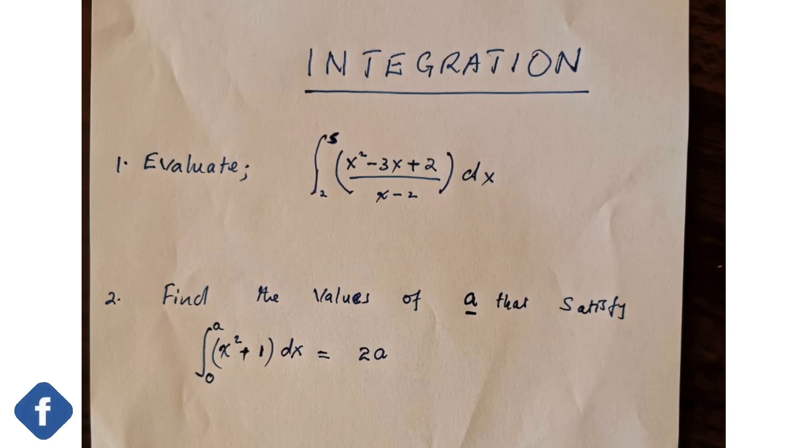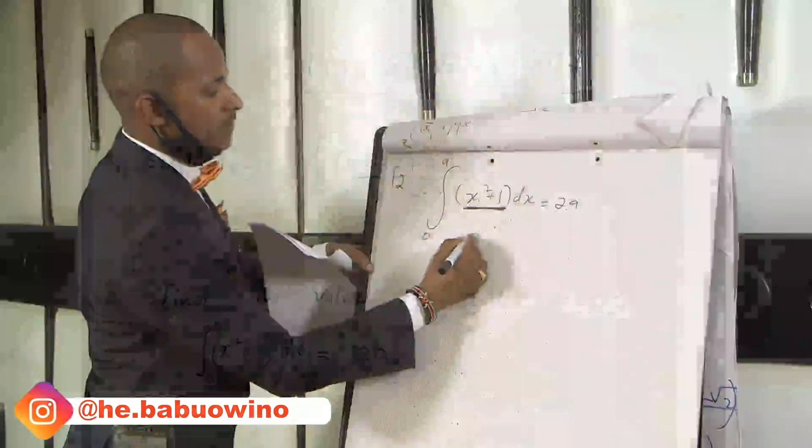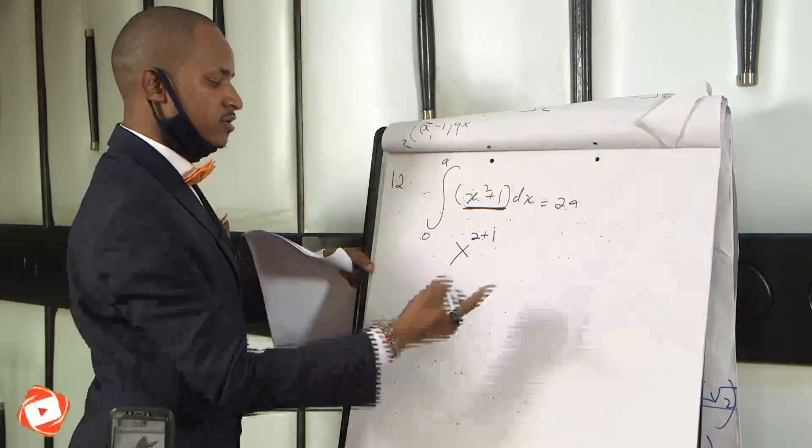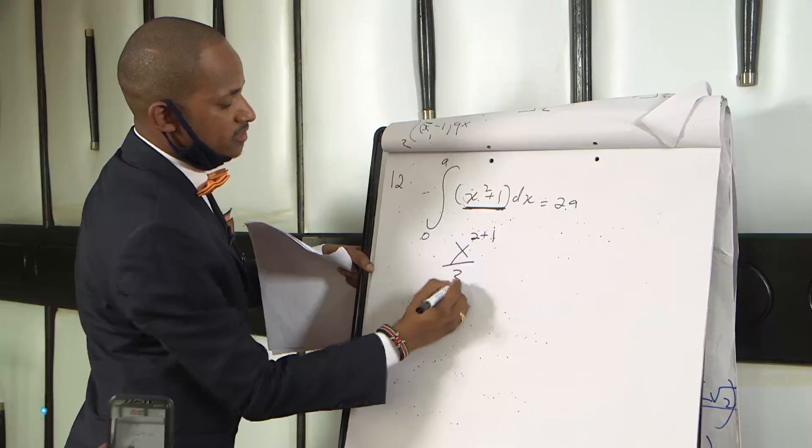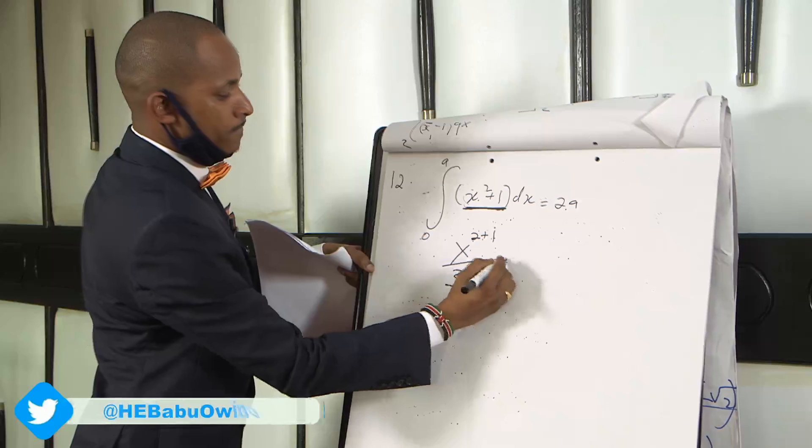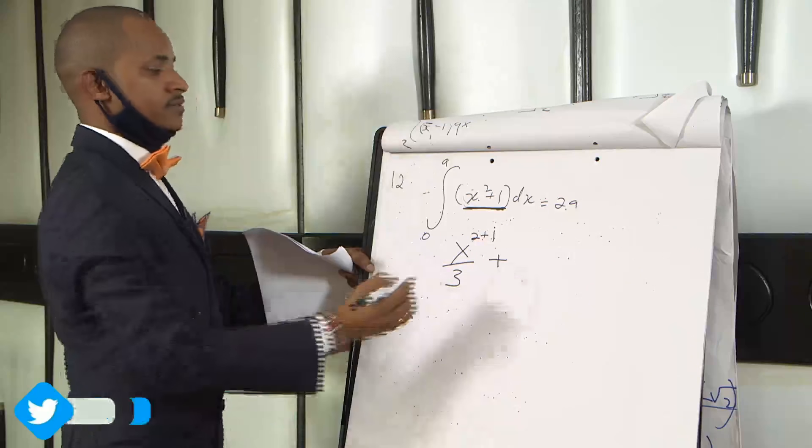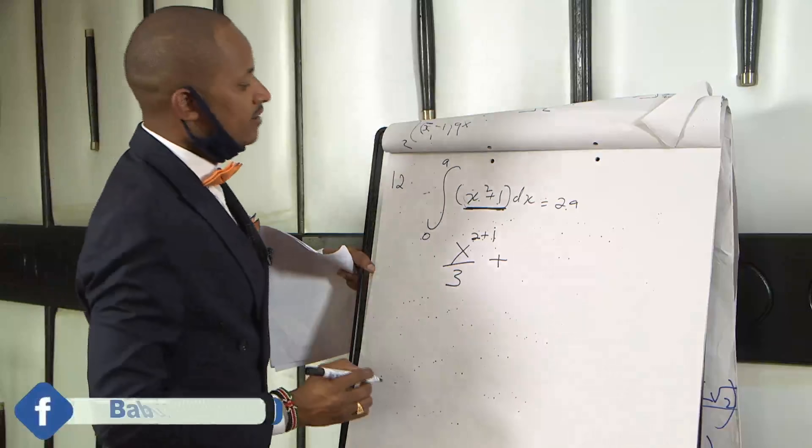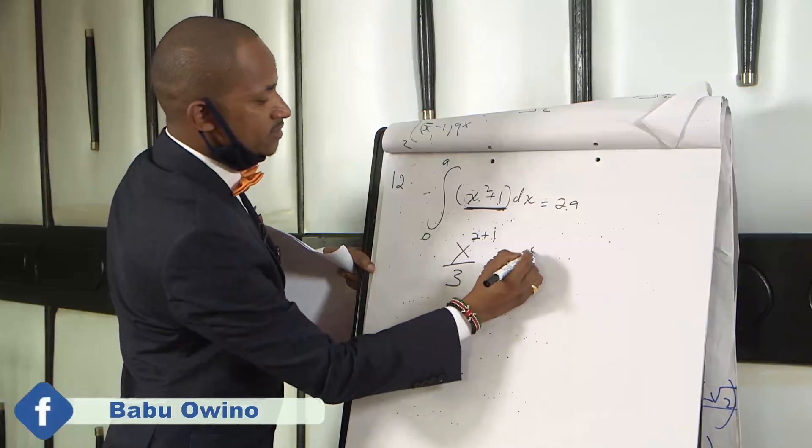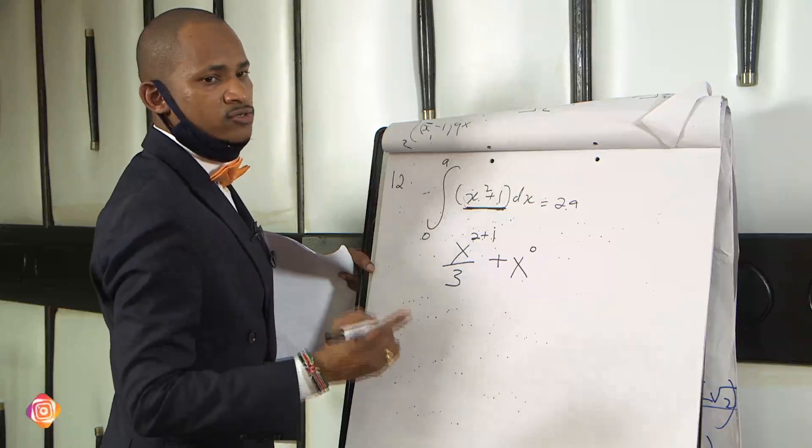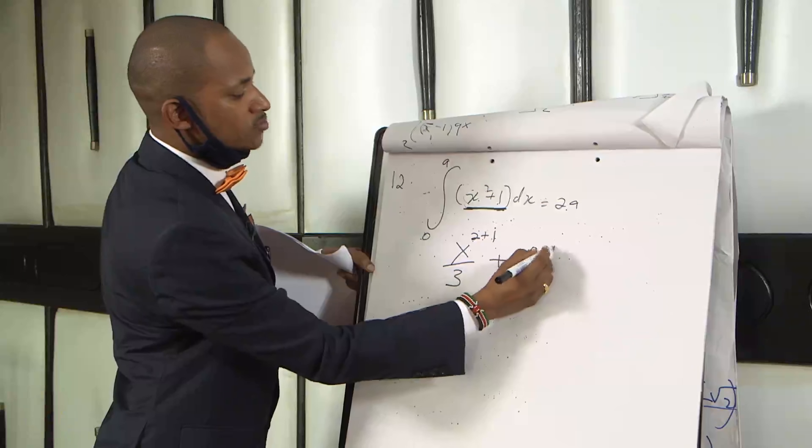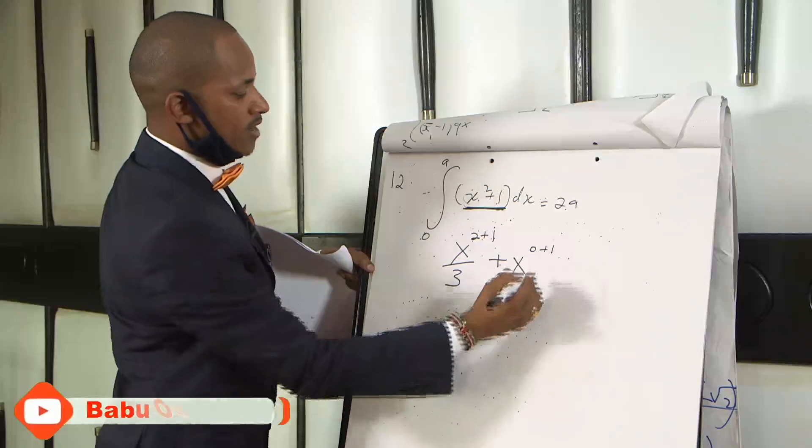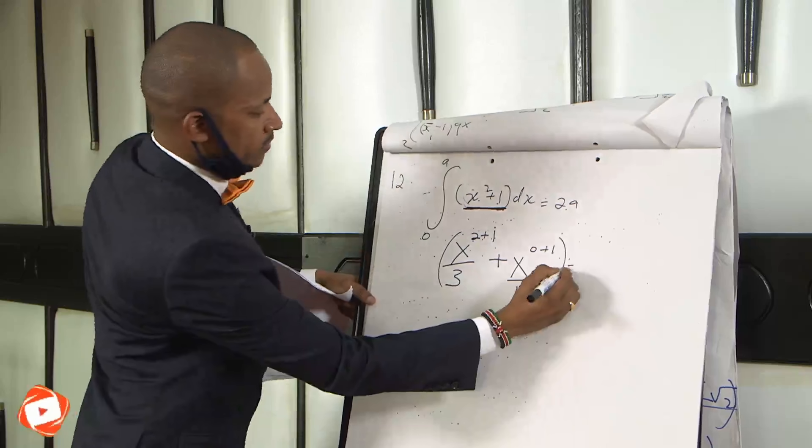So by integrating this, as I told you, write x first. Integrate the first part x. Then it is squared. Add 1 in integration. Add 1, then divide by the summation of what you get, which is 3. Plus here we have x raised to power 0. I told you any number raised to power 0 is 1, any letter raised to power 0 is 1. So x raised to power 0 plus 1, divide by 1.